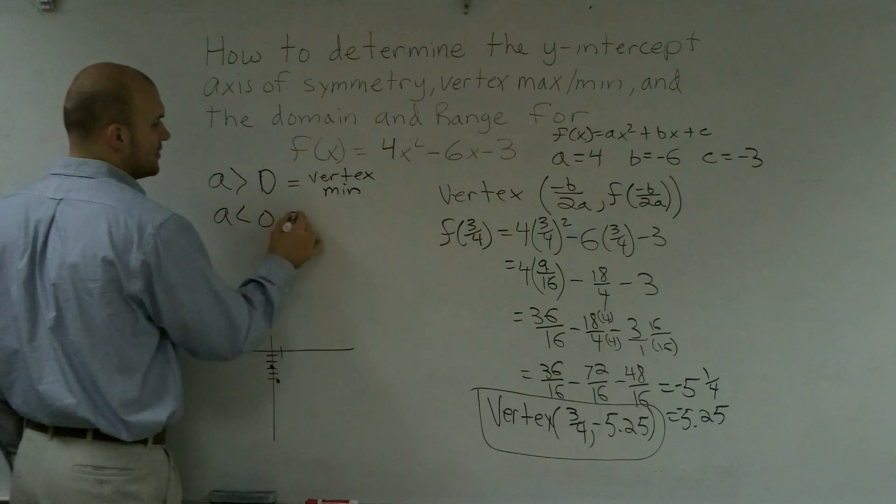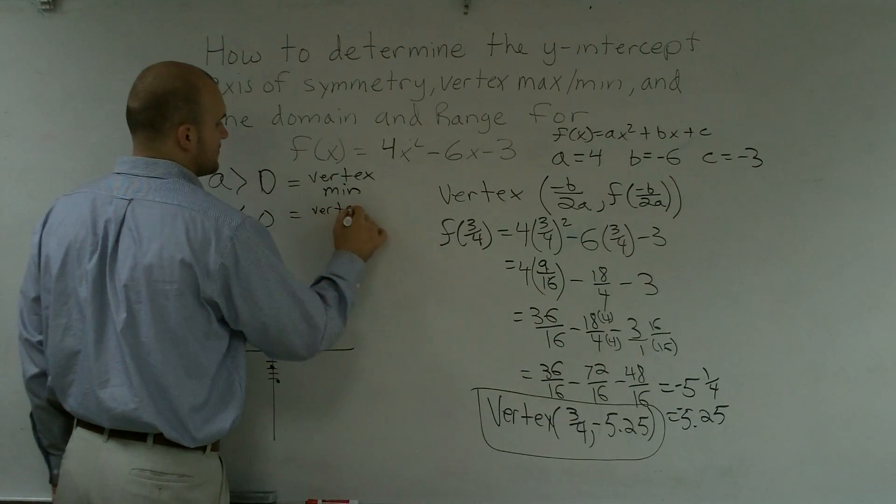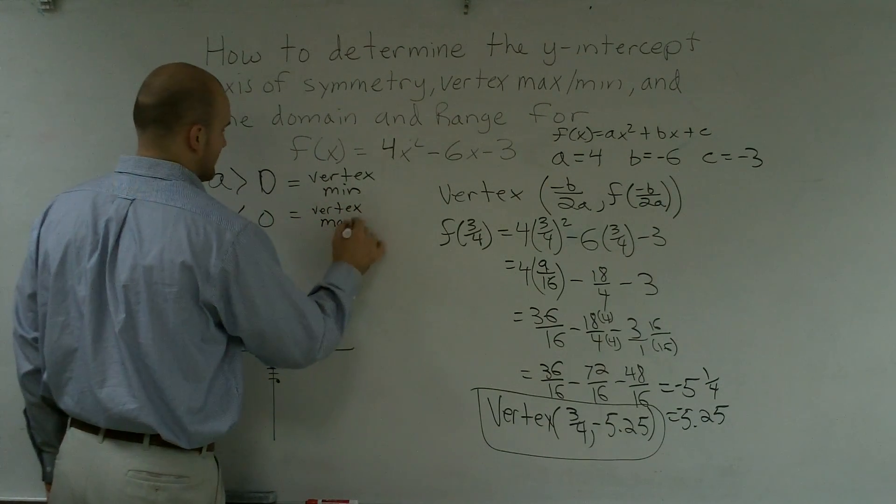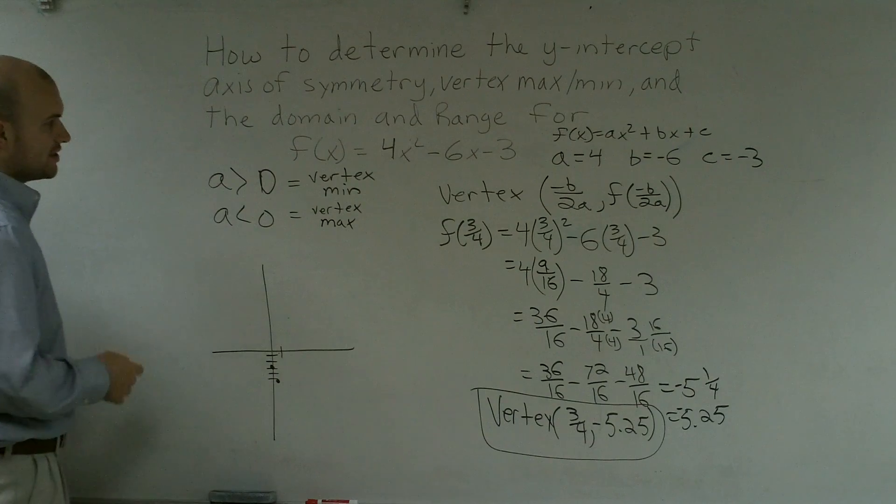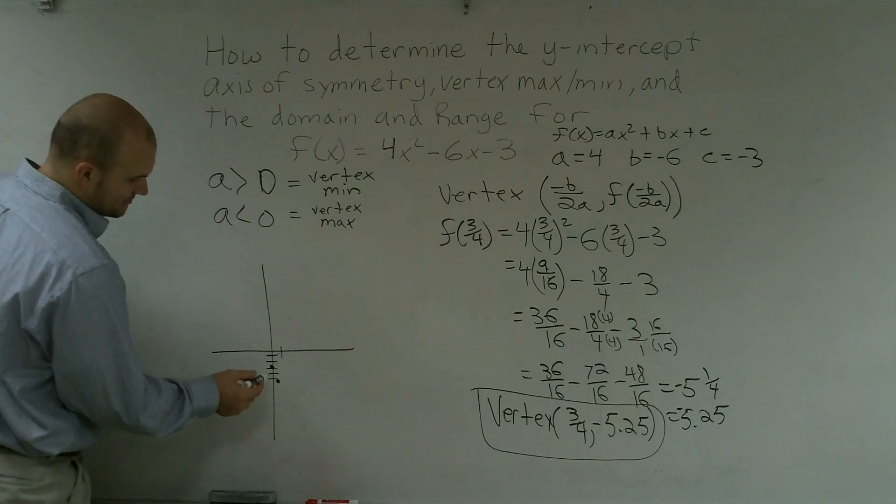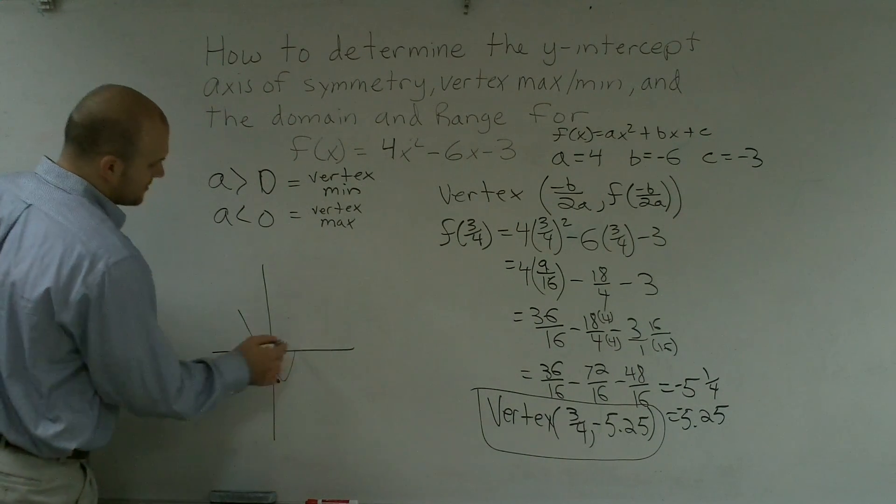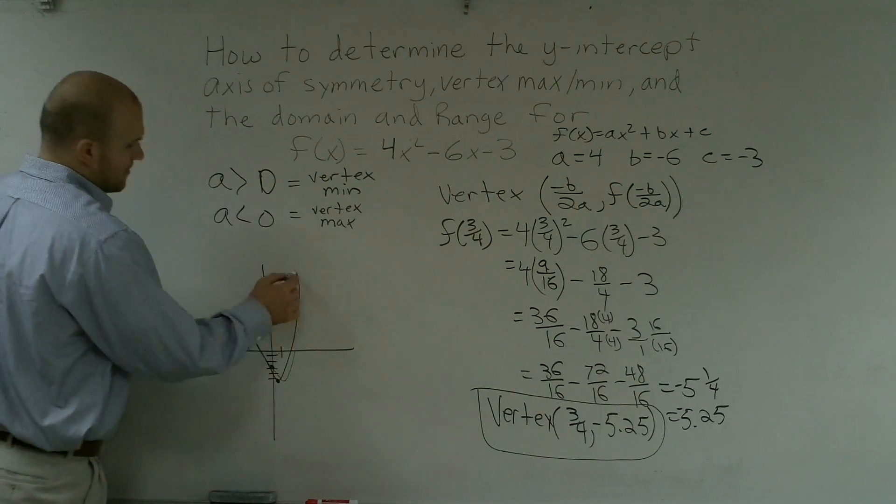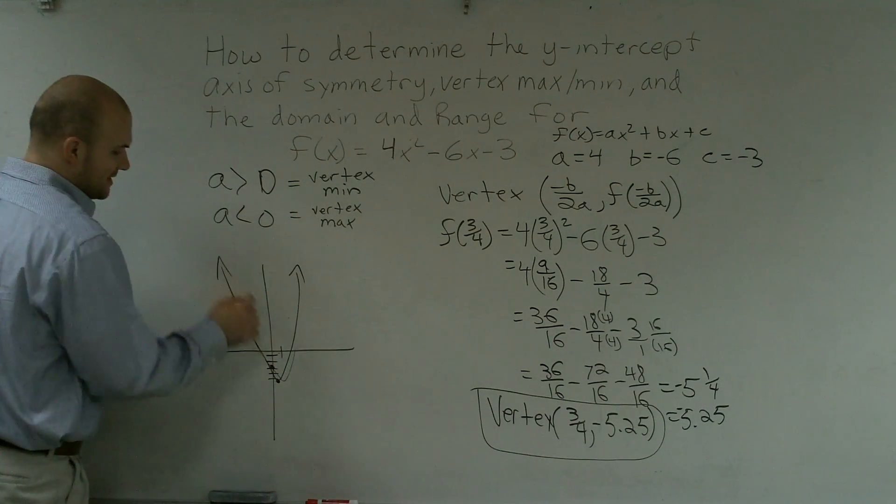And if a is less than 0, then your vertex is a max. So since my a is greater than 0, I know that this is a minimum point.